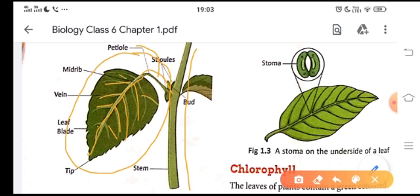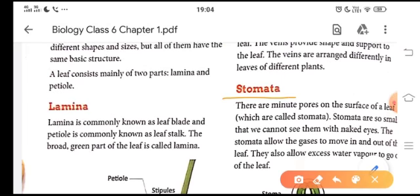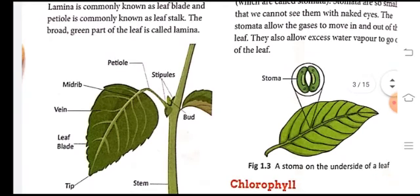These branches are known as veins. These veins form a network in the leaf and also make the framework of the leaf. The function of these branches or veins is the transportation and translocation of water and food. The next structure is stomata.